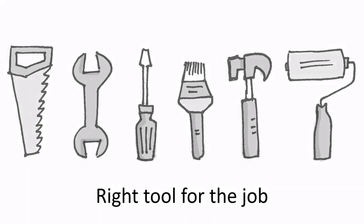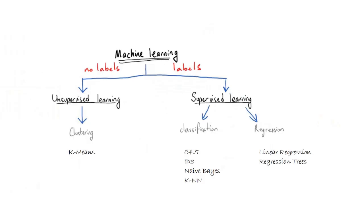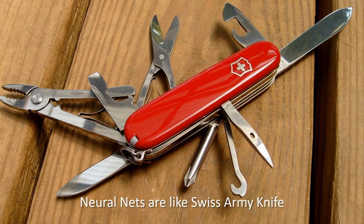Choosing the right tool for the right job is important. Algorithms are tools for data scientists. We will find solutions for two types of problems: there is a supervisor, or there is not — supervised vs unsupervised. There are different algorithms for these different types of problems. For example, the ID3 decision tree algorithm can be applied for classification problems but not regression. Similarly, regression trees can be applied for regression but not classification. Neural networks, on the other hand, can be applied for all types of problems — supervised, unsupervised, regression, or classification. It's like a Swiss army knife.